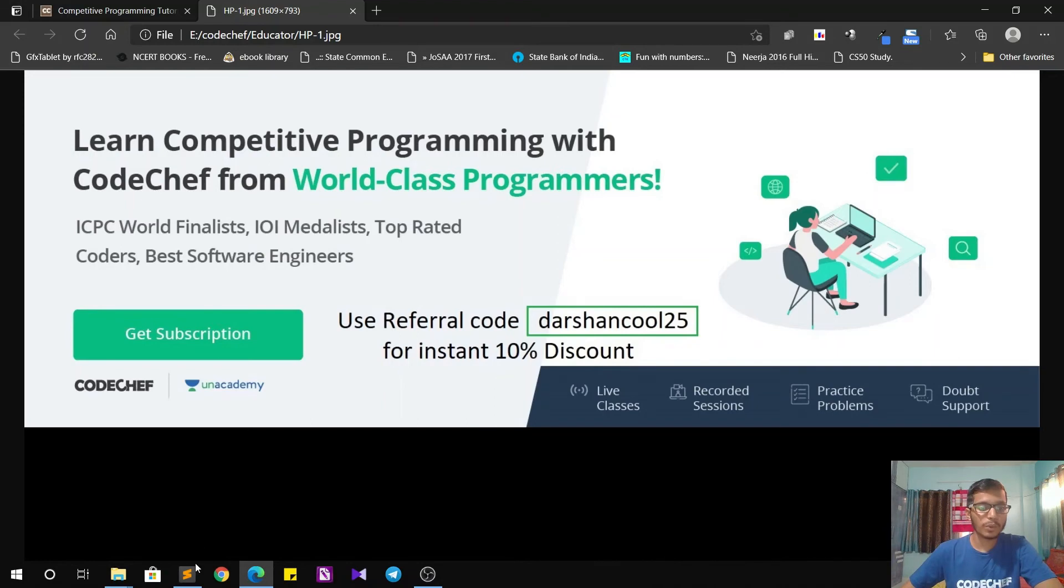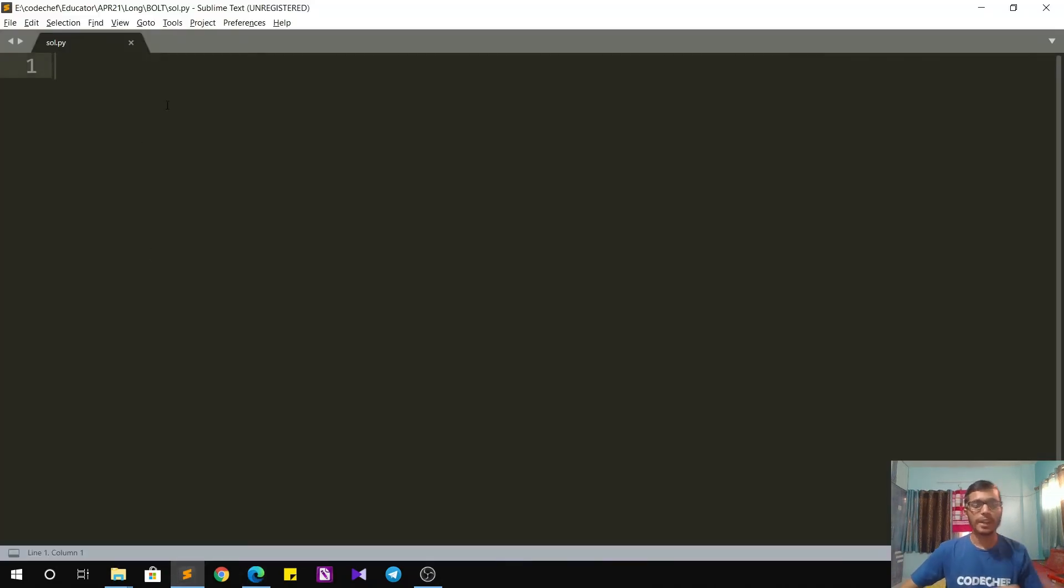Okay, now let's move towards the implementation. So the Python implementation starts with taking the input for number of test cases. So I just take T as the number of test cases. Now for each test case, that is for underscore in range T, for each test case,